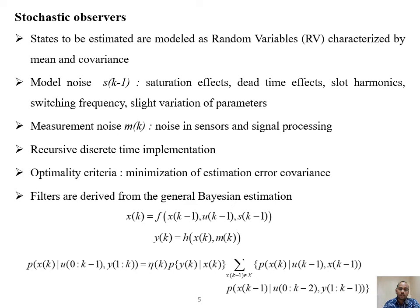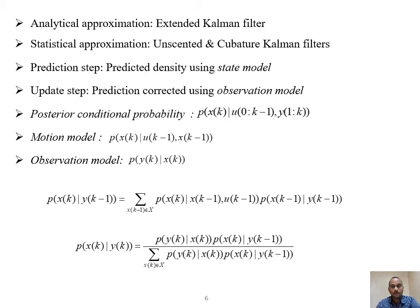The implementation of the filter becomes very easy because of its recursive nature, and the optimality criteria is the minimization of the estimation error covariance. All stochastic observers are derived based on the basic Bayesian estimation formula, where the a posteriori probability is derived from the a priori probability using the prediction step and update step. Analytical approximation leads to the extended Kalman filter, while statistical approximation gives the unscented and cubature Kalman filters, which are fully nonlinear.